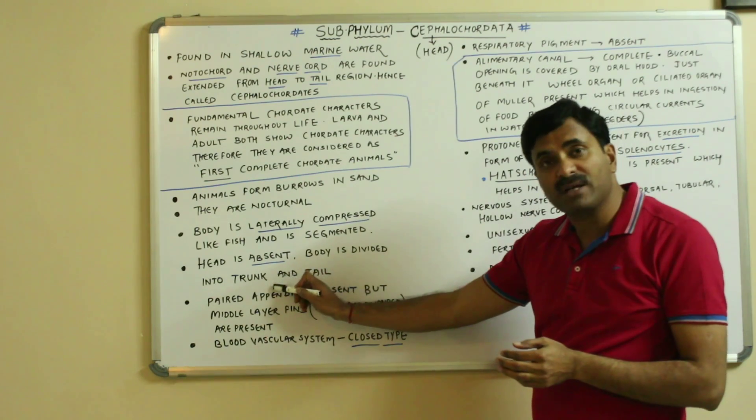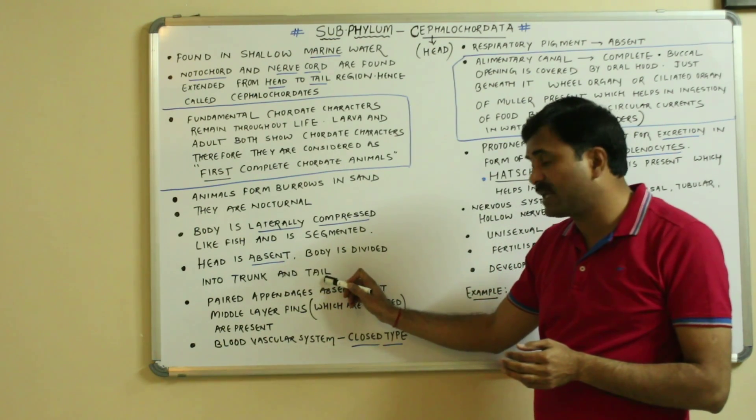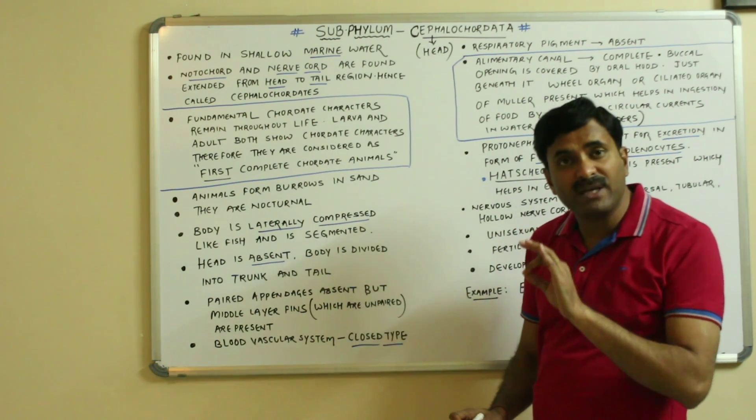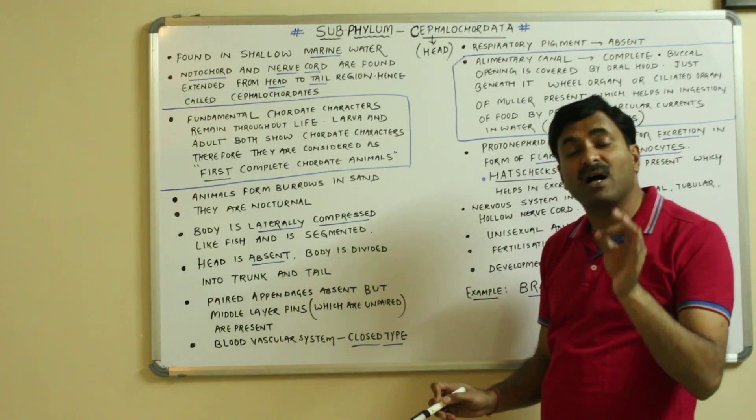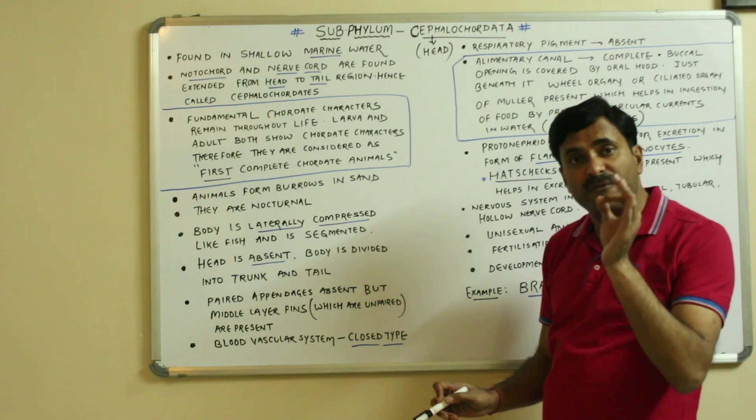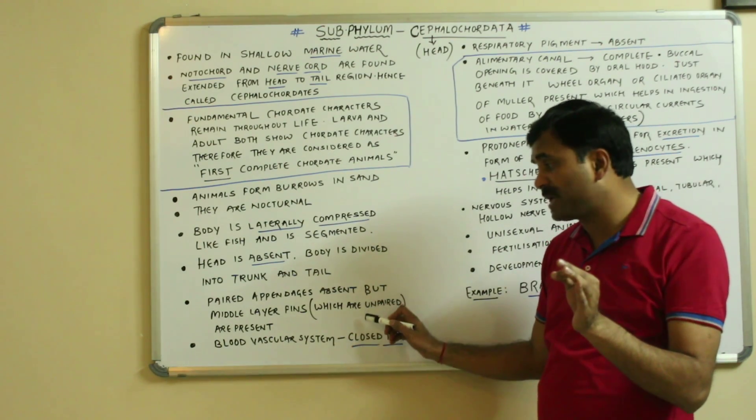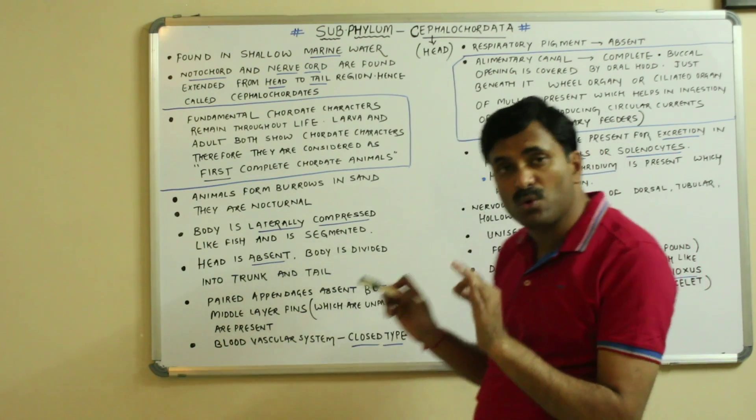They don't have any paired appendages but have a middle layer fin which is unpaired. The blood vascular system is closed type.